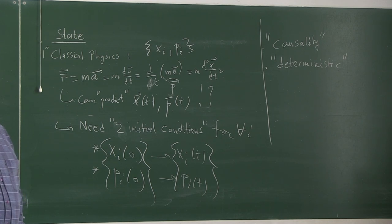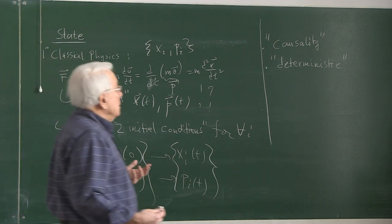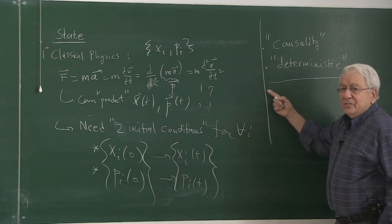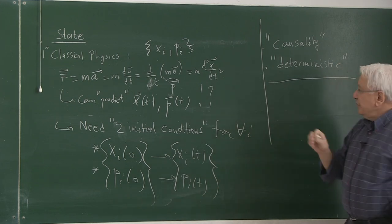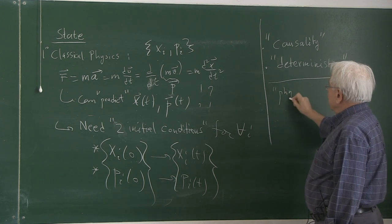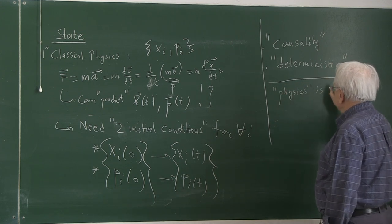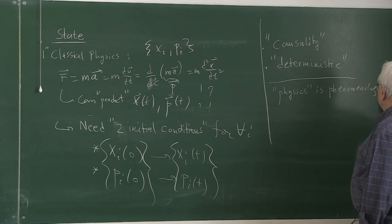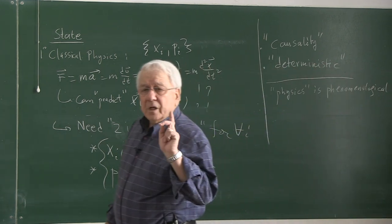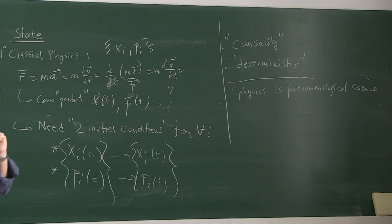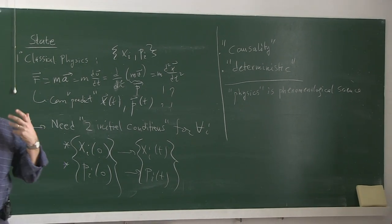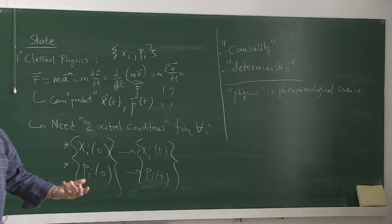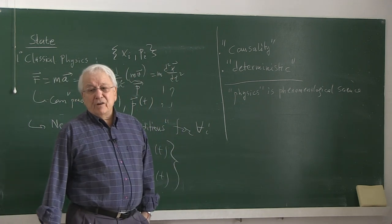We'll see how that concept will change and why it should change. Everything is based on the essential observation that physics is a phenomenological science. There is only one way to gather information: to measure. Observation, experimentation, and measurement — the only way to gather information is measurement. So the key concept is measurement.